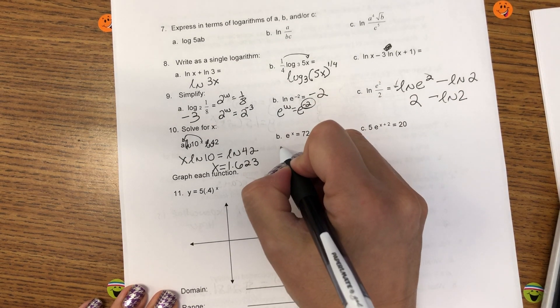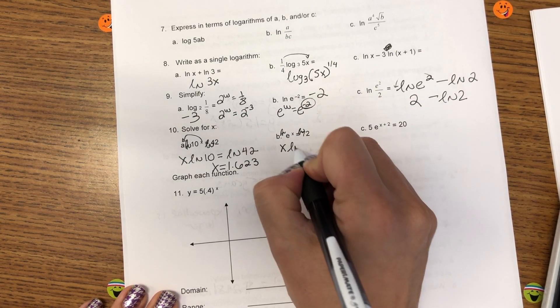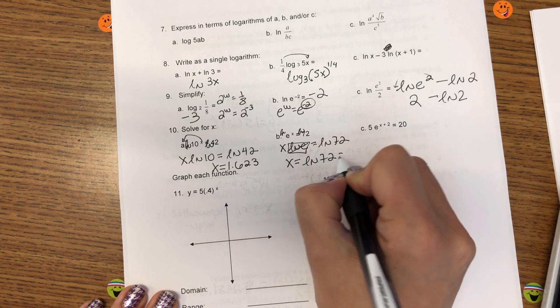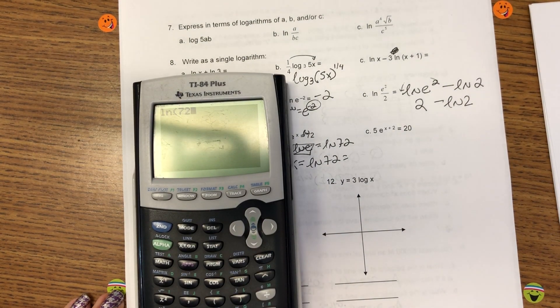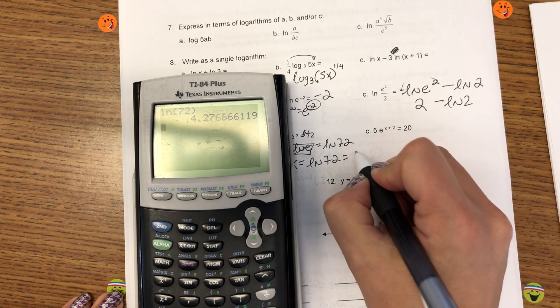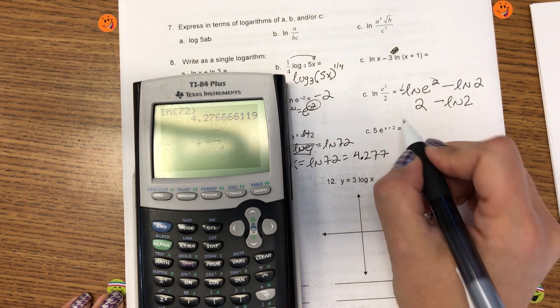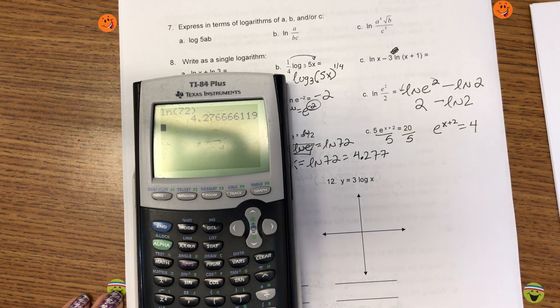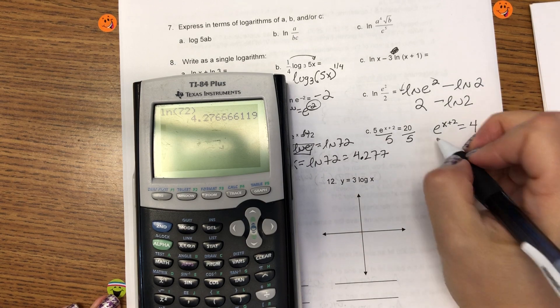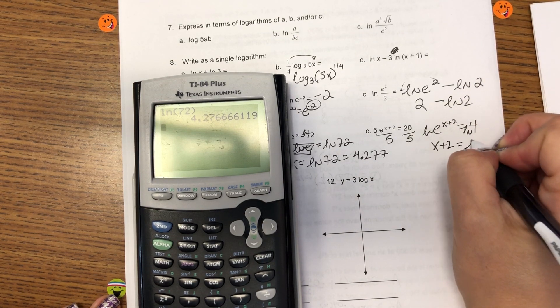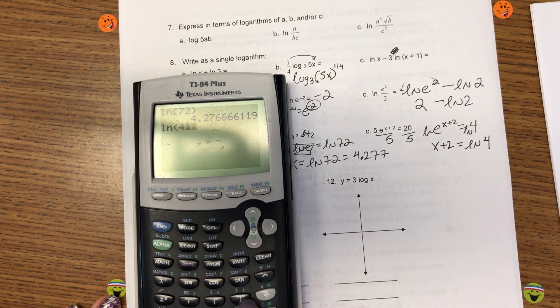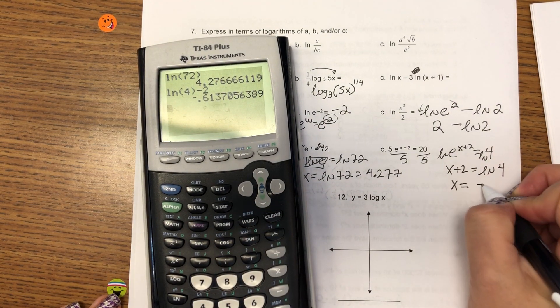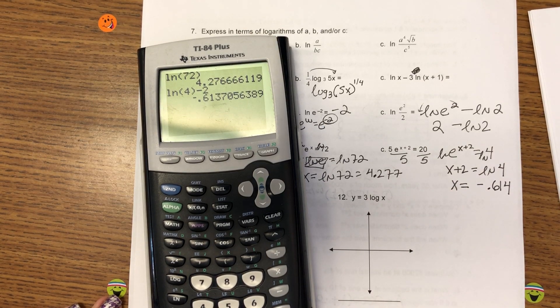So, then for b, when I ln both sides, the x becomes the coefficient. And then ln of e is 1. So, x is the ln of 72, 4.277. And then for c, I cannot do anything with a log until I isolate the exponential. So, first, we have to divide by 5. Then, if I ln both sides, I get x plus 2 equals the ln of 4. And I'm going to subtract the 2 to the right to solve. And we get negative 0.614.